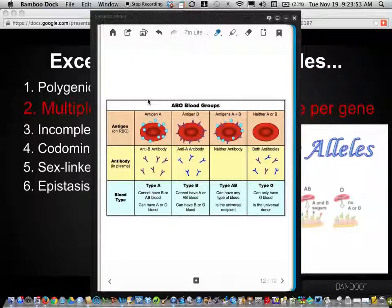So, there's an allele for protein A, and that protein is on the outside of every red blood cell that is blood type A. There's also an allele for protein B, and that is on the outside of every red blood cell with B type blood.